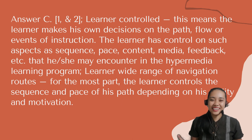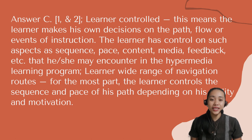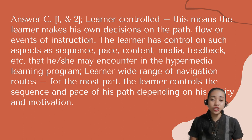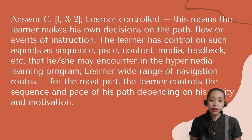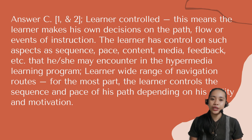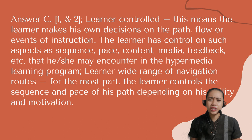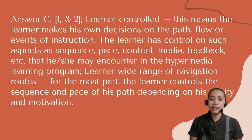The correct answer is letter C — One and two. Learner control means the learner makes his own decisions on the path, flow, or events of instruction; the learner has control over aspects such as sequence, pace, content, media, and feedback in the hypermedia learning program. Learner wide range of navigation routes means for the most part the learner controls the sequence and pace of his path depending on his ability and motivation.